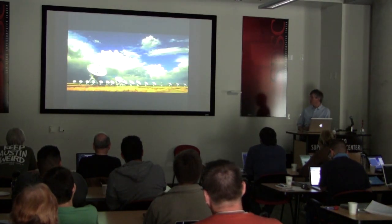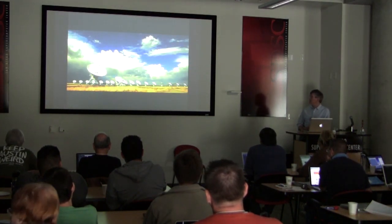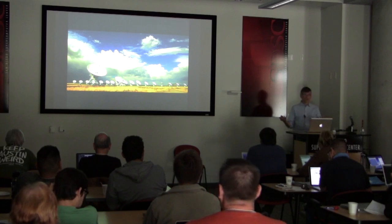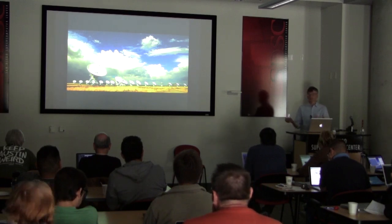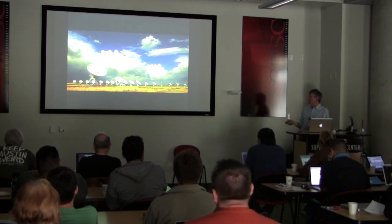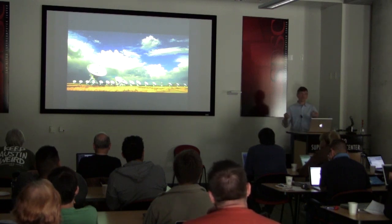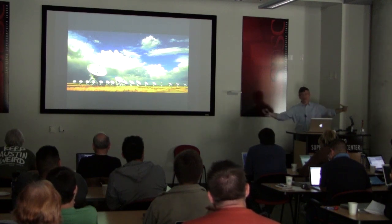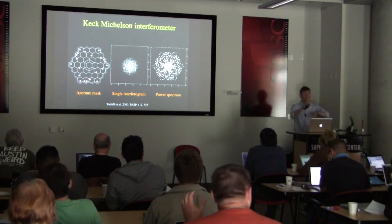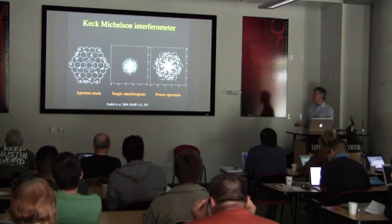Radio telescopes look very different. This is the VLA in New Mexico — it consists of many individual telescopes hooked together electronically to act as one large telescope. The telescopes are on movable platforms on railroad tracks in a three-armed configuration. You can expand or contract the array, and the important thing about an interferometer is the arrangement and spacing of all its elements.